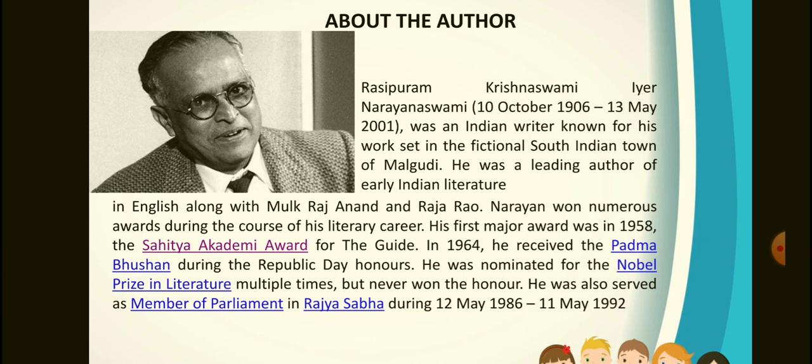Rashipuram Krishnaswamy Narayan was born on 10th October 1906. He was an Indian writer known for his work set in the fictional South Indian town of Malgudi. He was a leading author of early Indian literature in English, along with Mulk Raj Anand and Raja Rao.